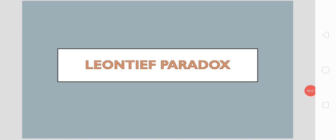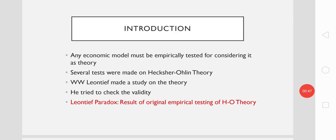Although the theory is well established, the testing may not always produce a consistent result, so it may lead to some paradoxical result. One such study was conducted on the Heckscher-Ohlin theory by Wassily Leontief in 1953, and that study turned out to be the Leontief Paradox. Several studies were made on the Heckscher-Ohlin theory of international trade, and Leontief's study became a popular empirical testing of the theory.